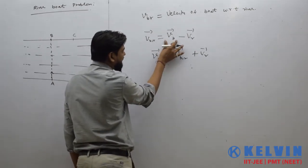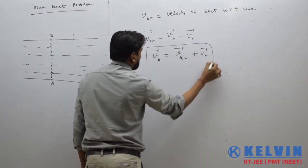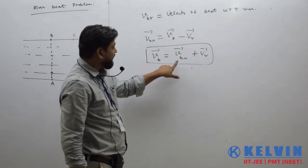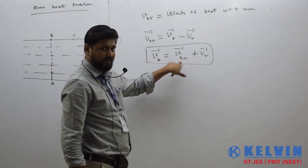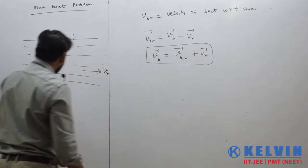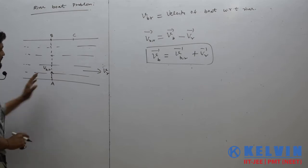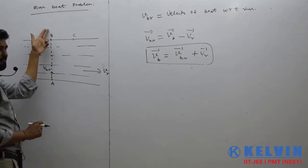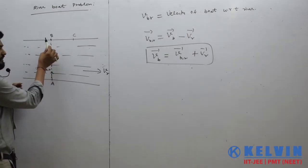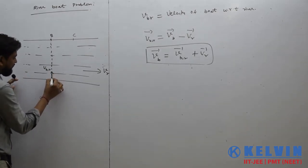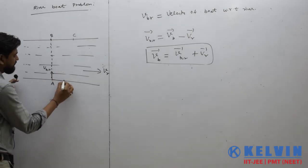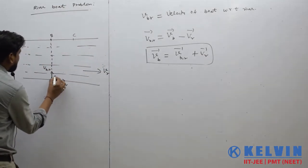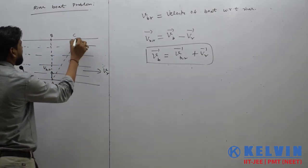It is very clear that the actual velocity of the boat as seen from the earth is the vector sum of velocity of boat with respect to river plus velocity of river. So if the boatman heads perpendicularly — taking vbr in that direction — his actual velocity is the vector sum of vbr and vr, and the resultant points diagonally, meaning he will reach some point C instead of B.